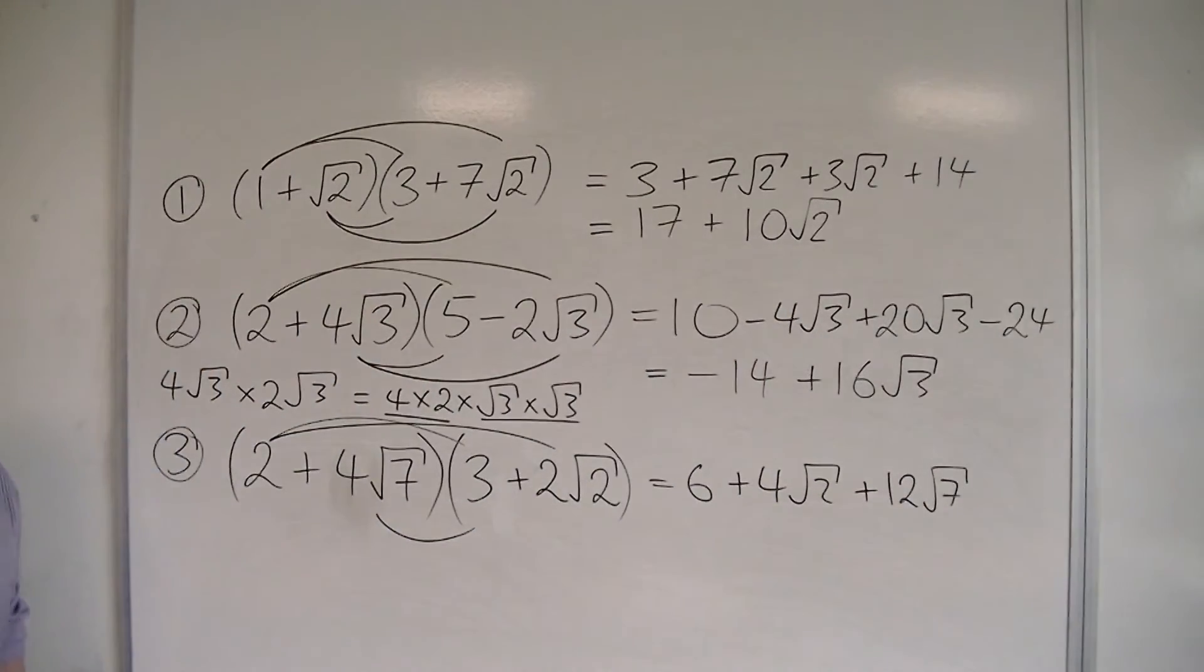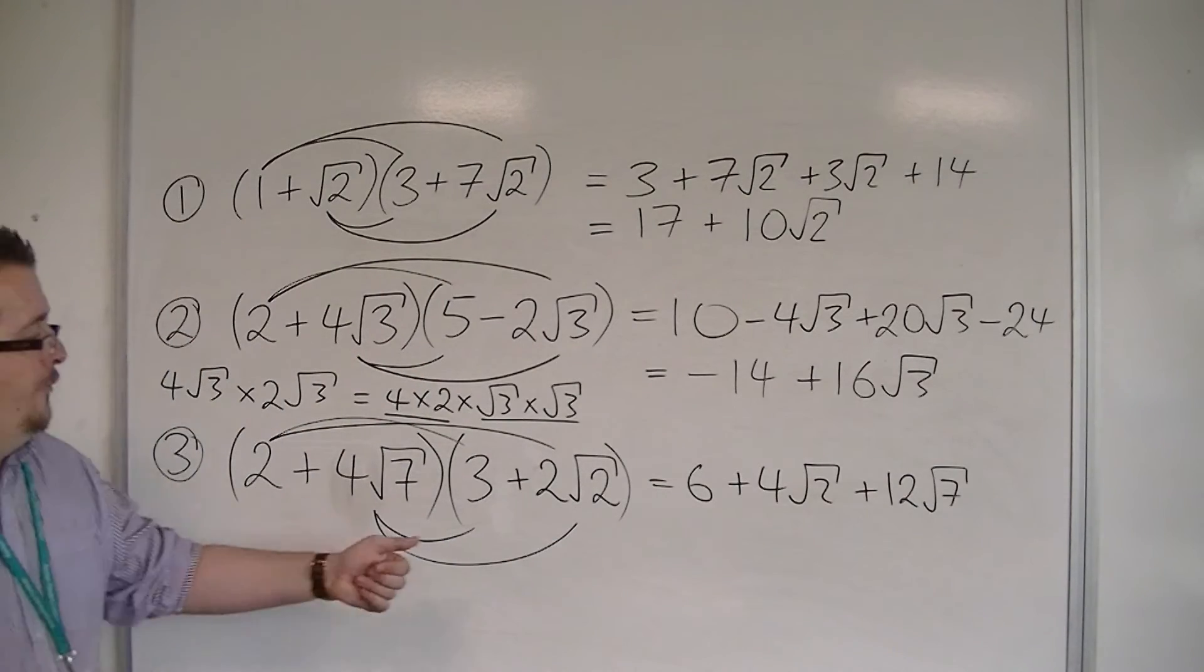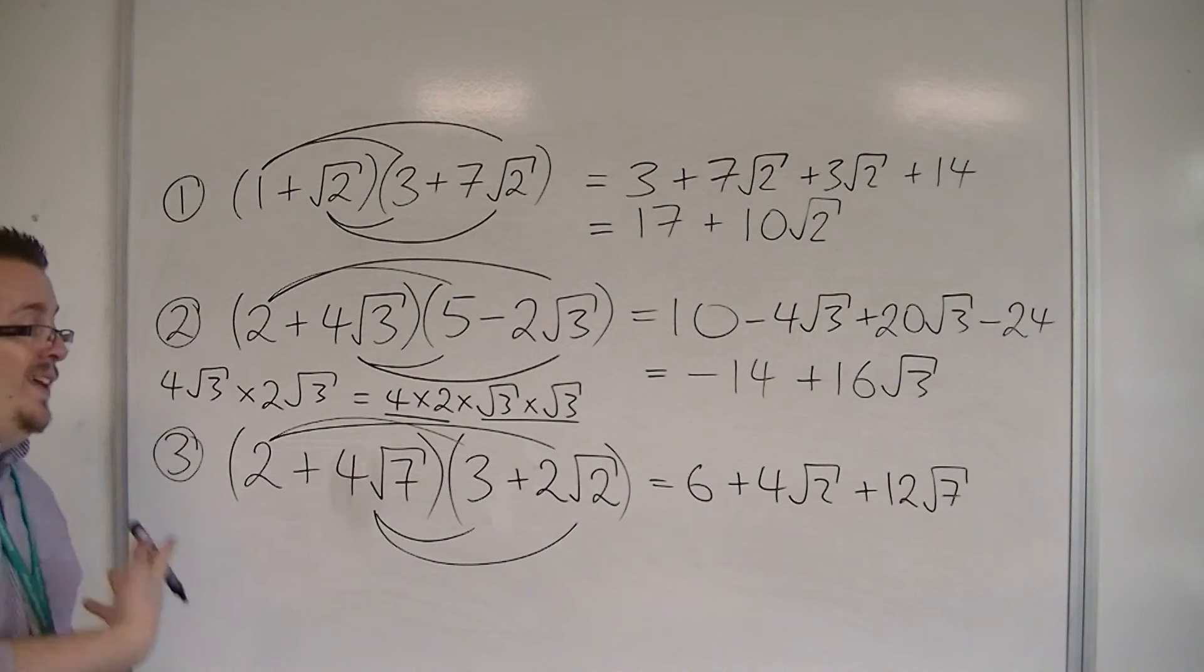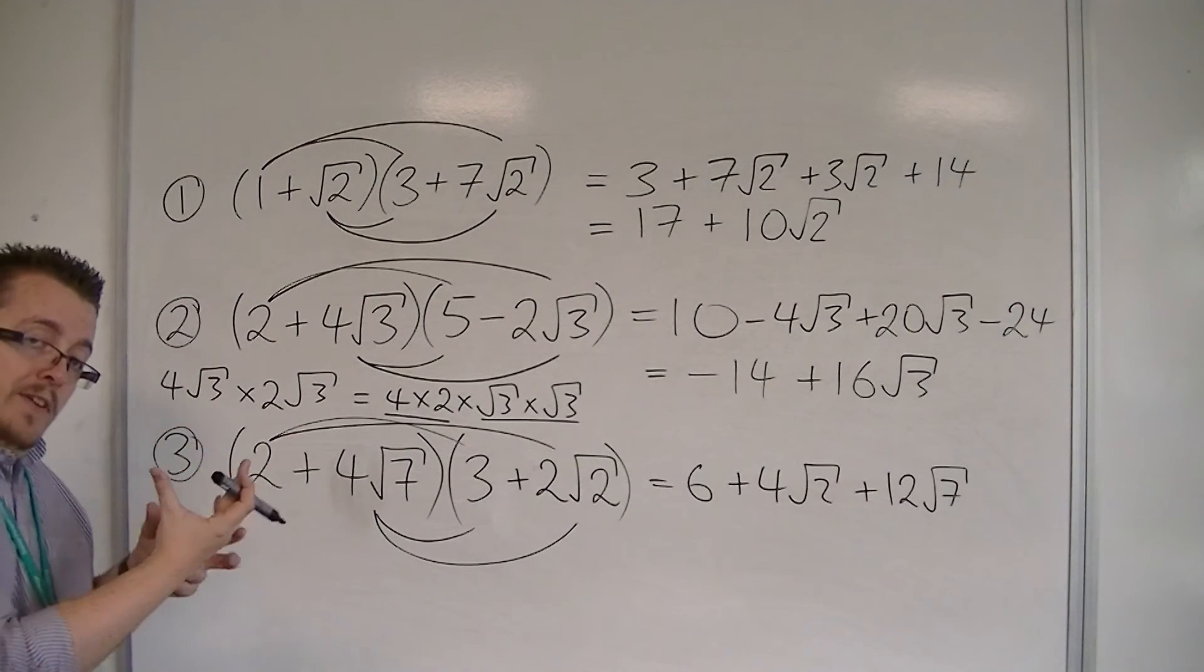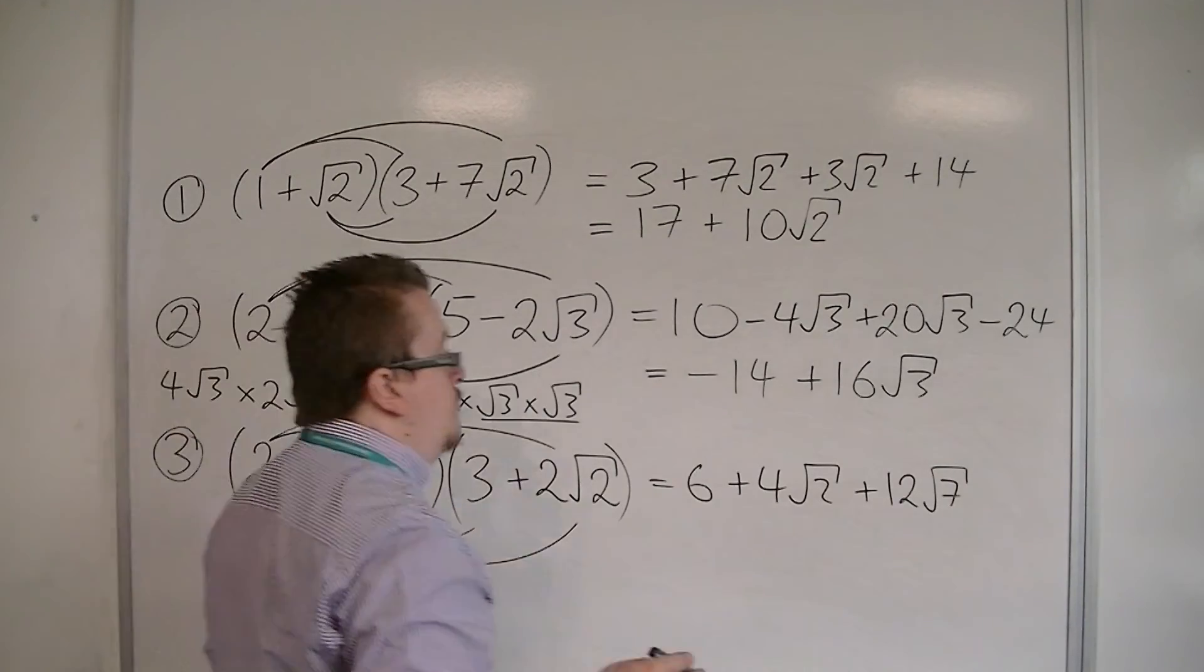And then finally, I've got 4√7 times 2√2. 4 times 2 is 8. √7 times √2 is √14. The 7 times 2 can go inside the square root. So I've got 8√14.